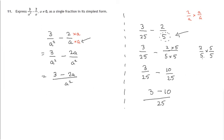And that's just the same as this step here, where we had 3 25ths minus 10 25ths, so we'll have 3 minus 10 of them, 3 minus 2 a of them.